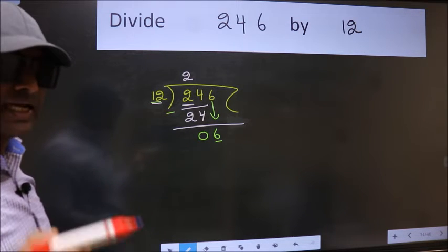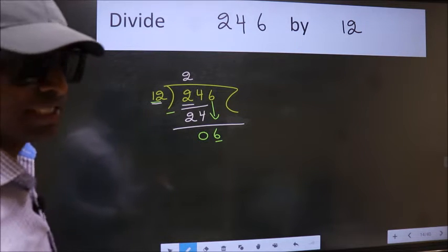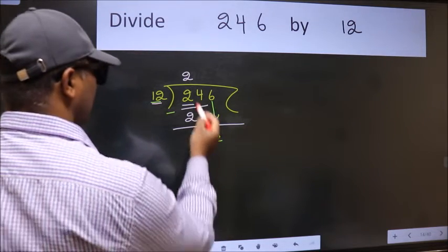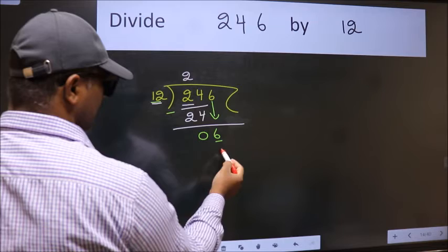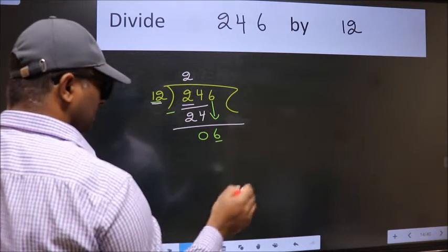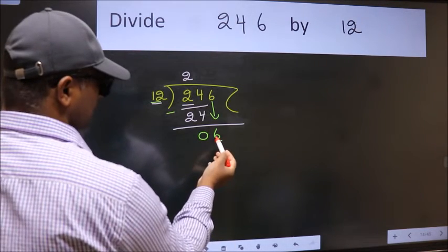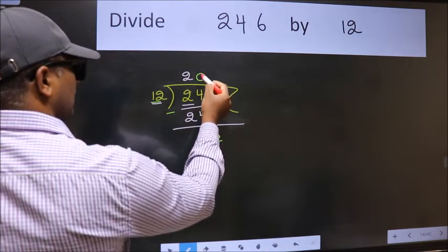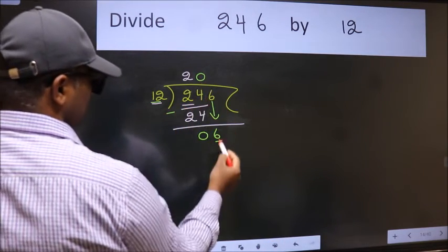Instead of that, what we should think of doing is, which number should we take here? If I take 1, we will get 12. But 12 is larger than 6. So what we do is, we take 0 here. So 12 into 0 is 0.